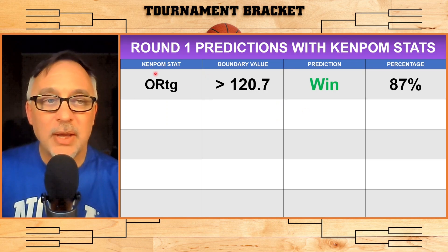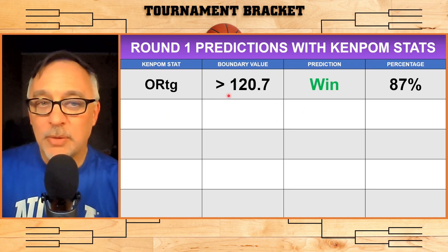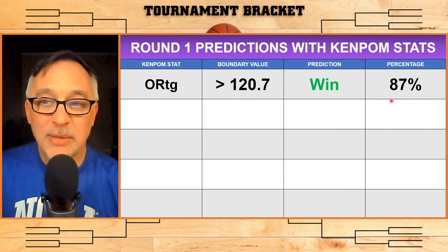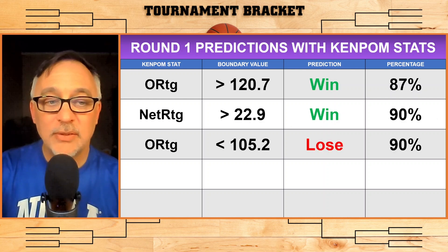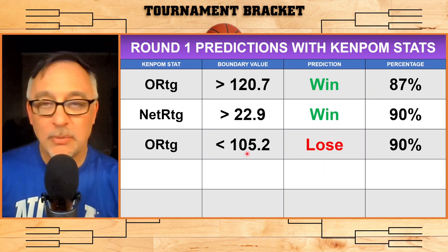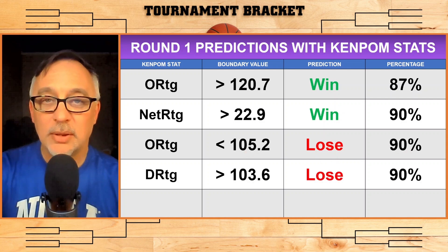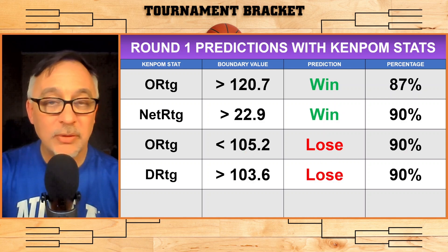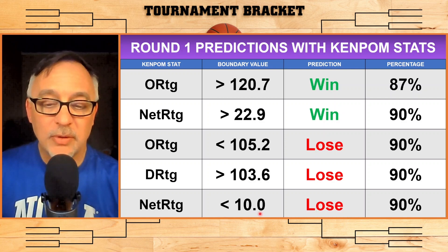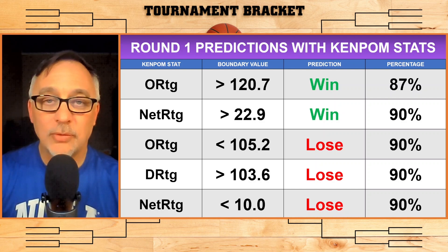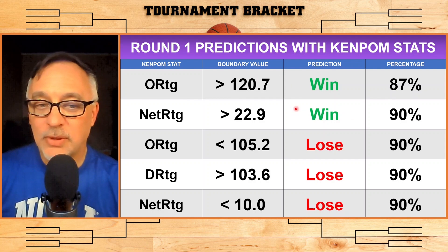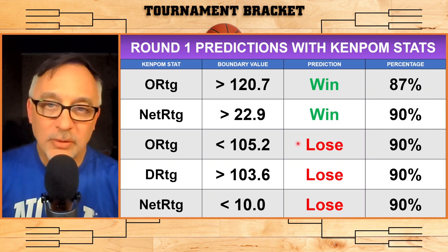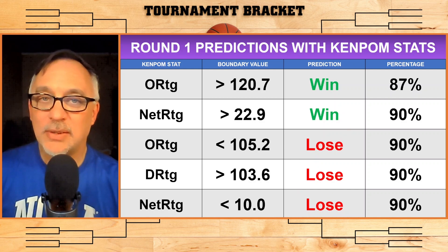So here's a summary of round one predictions using KenPom stats. If a team has an offensive rating above 120.7, they win their first round game at 87%. If their net rating is above 22.9, they win at 90%. If a team has an offensive rating below 105.2, they lose at 90%. If a team has a defensive rating above 103.6, they lose 90% of the time. And if a team has a net rating below 10.0, they lose 90% in round one. These rules capture the top teams — like one through four seeds — and the bottom teams, like 13 through 16 seeds.